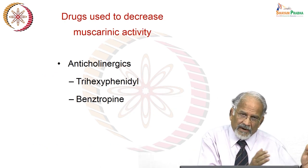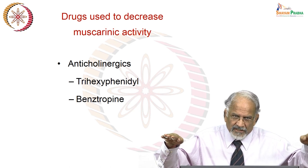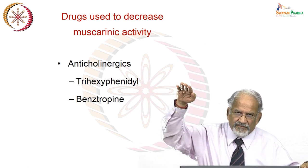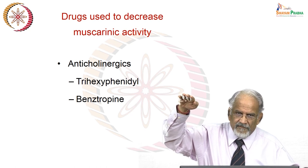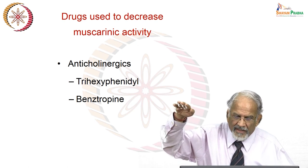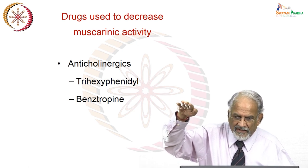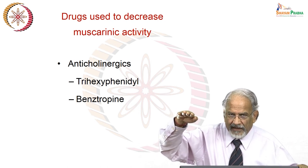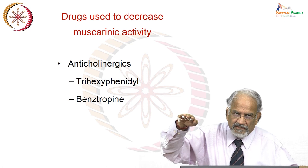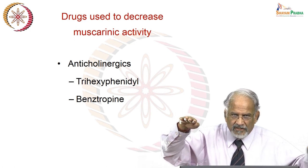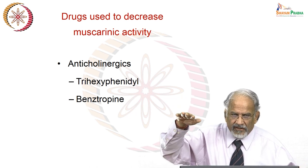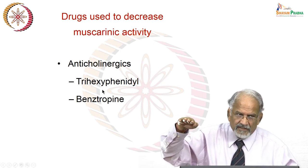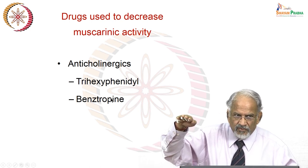Since dopaminergic transmission is decreased and the cholinergic mechanism is relatively increased due to loss of inhibition, another approach is to reduce cholinergic activity by giving an anticholinergic or anti-muscarinic agent. In this case, we use anticholinergic drugs that do not have much action on the periphery but act mainly on the brain — these are trihexyphenidyl and benztropine. These are the two drugs primarily used in Parkinsonism.